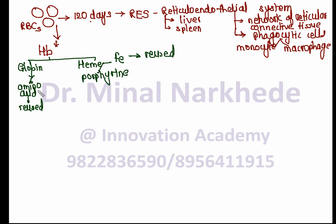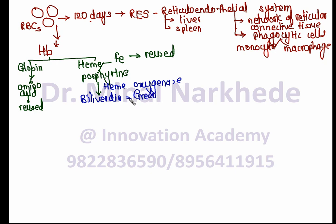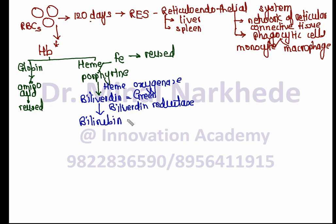The porphyrin is further decomposed with the help of an enzyme called heme oxygenase and is converted into a pigment called biliverdin, which is green in color. This pigment is then acted upon by another enzyme called biliverdin reductase, which converts biliverdin into bilirubin, which is yellow in color.